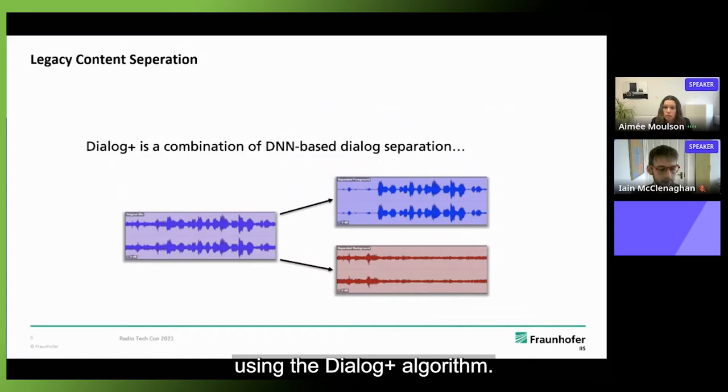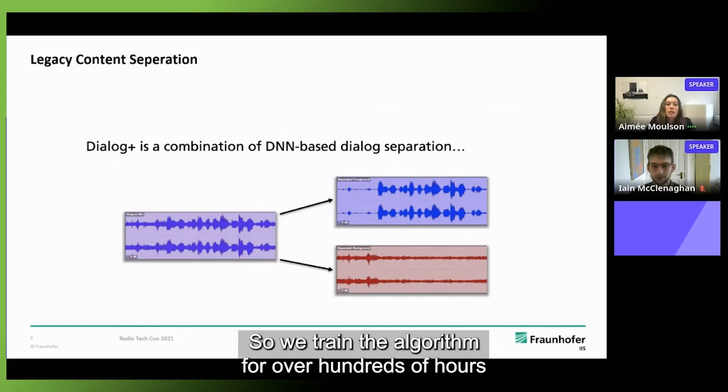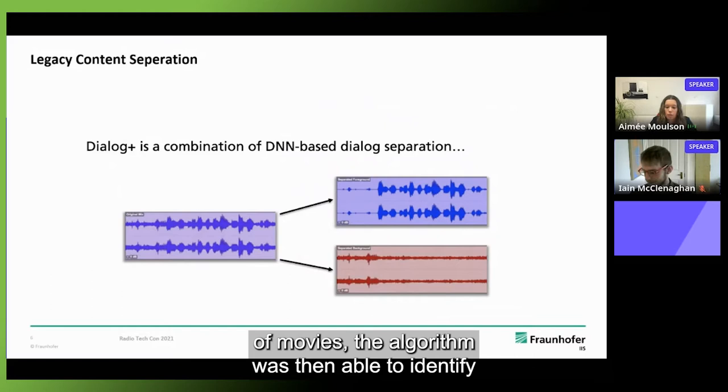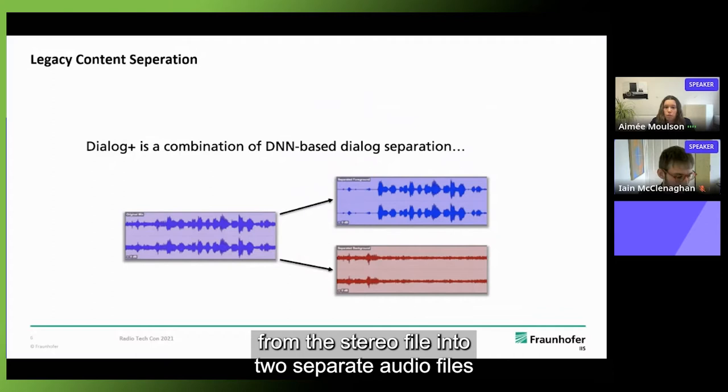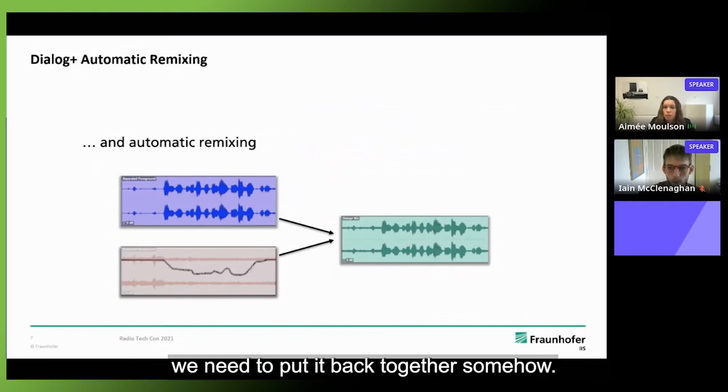If you have a legacy file or legacy stereo content, we can still extract and use it with Dialogue Plus using the Dialogue Plus algorithm. The key technology here is deep neural network technology. The algorithm was trained to listen for what is a background sound, for example bed sounds, and what is foreground sounds such as speech. We trained the algorithm for over hundreds of hours of movies and the algorithm was then able to identify these foreground and background sounds and it splits it out from the stereo file into two separate audio files with your background and your foreground.